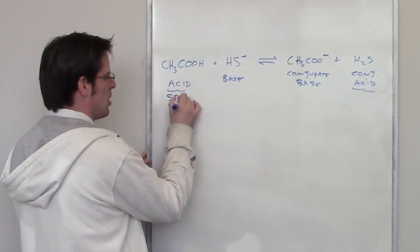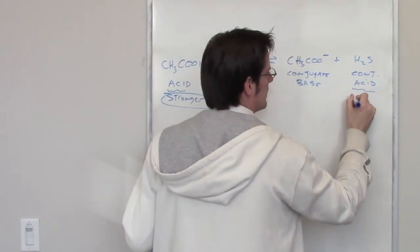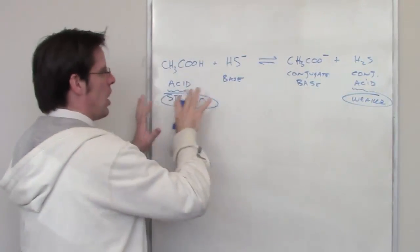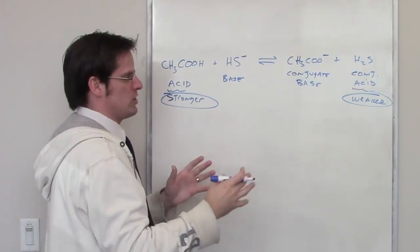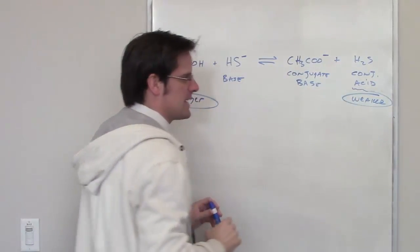So acetic acid is my stronger of these two acids. H2S is the weaker of these two acids. Remember that equilibrium is always going to want to favor the side where you have less reactive, weaker stuff. So the side of the reaction that's going to be favored is going to be the right-hand side.